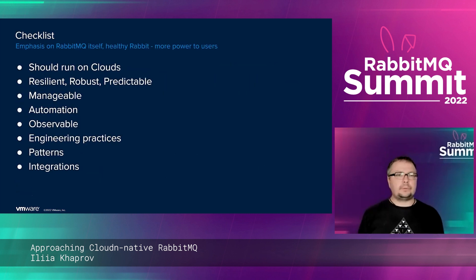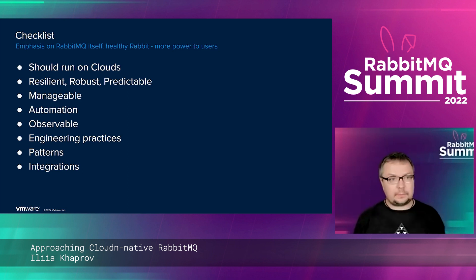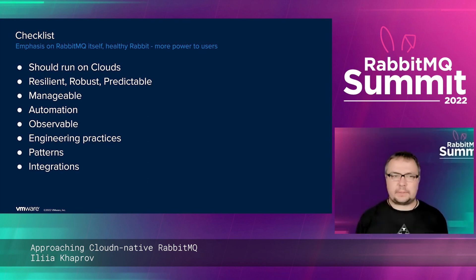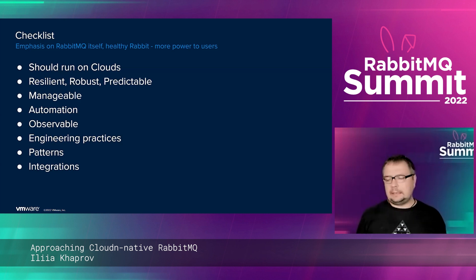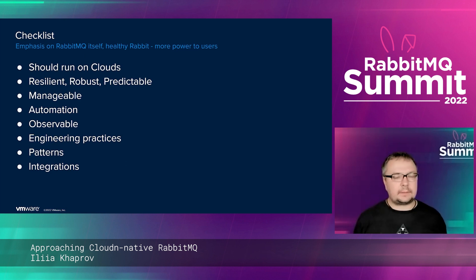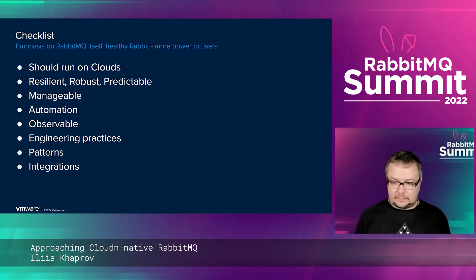We should run on clouds, we should be resilient, robust, predictable, we should be manageable, we should employ automation, we should be observable, there should be certain engineering practices in place, usage patterns and operation patterns should be available, and of course integrations. We'll go quickly through this.